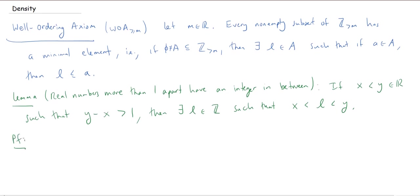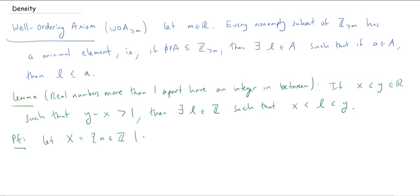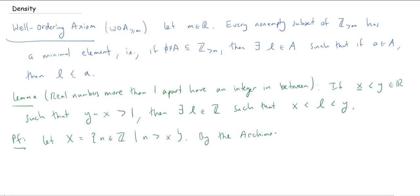Let's try to prove this. I'm going to use the well-ordering axiom, so I need a non-empty subset. Let capital X be the set of all integers that are bigger than little x. By the Archimedean property, for any real number there is an integer bigger than it, so this set X is non-empty.